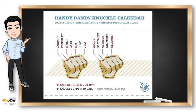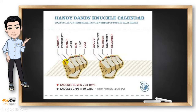For easy recall, we can use our knuckle bumps and gaps to determine the specific number of days for each month in the Gregorian calendar. If I ask you the number of days for April, you start with the knuckle of your index finger: January, February, March, and then April. April is on the knuckle gap, so it has 30 days. For August — January, February, March, April, May, June, July — you start again with the knuckle of your index finger for August. August has 31 days because it's on our knuckle bump.